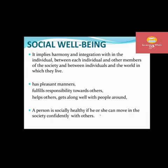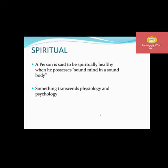Social well-being implies harmony and integration within the individual, between each individual and other members of society, and between individuals and the world in which they live. The person is adjustable — first in the family, then in the class, college, city, and the world. A socially healthy person has pleasant manners, fulfills responsibilities towards others, helps others, and gets along well with people around them, moving confidently in society.